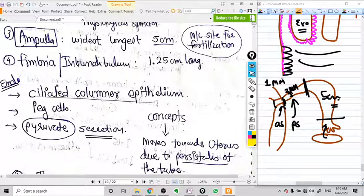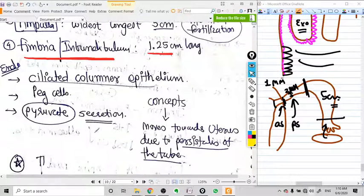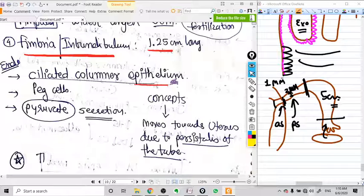The fourth part is the fimbrial part or infundibulum, that is 1.25 centimeters long and it has finger-like projections to catch the ovum.